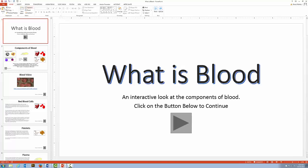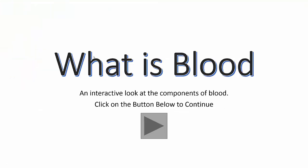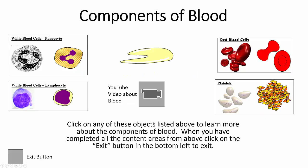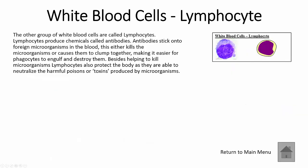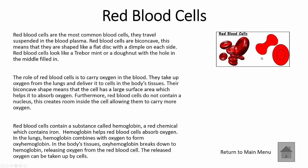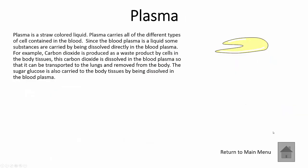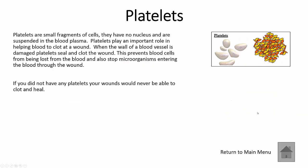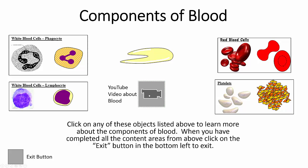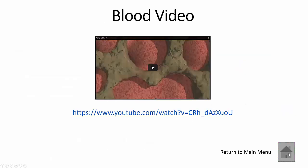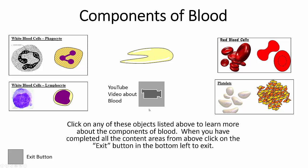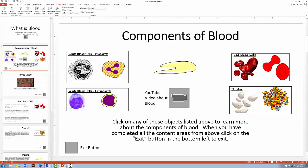Let me try it again — I'll do Slideshow > From Beginning. There's my title slide. I click Next, now I have the menu options. Let's go to white blood cells — I've got all the information. I click 'Return to Main Menu' and it takes me back. That's working for all of these now. I seem to have navigation and learner control. I've incorporated video and I have an exit button.